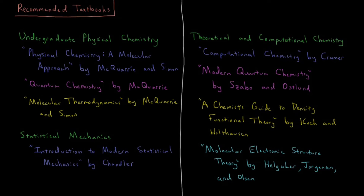For theoretical and computational chemistry, specifically within quantum chemistry — which is my subfield — for general computational chemistry I'd recommend Computational Chemistry by Cramer. The standard introductory graduate electronic structure theory text is Modern Quantum Chemistry by Szabo and Ostlund.